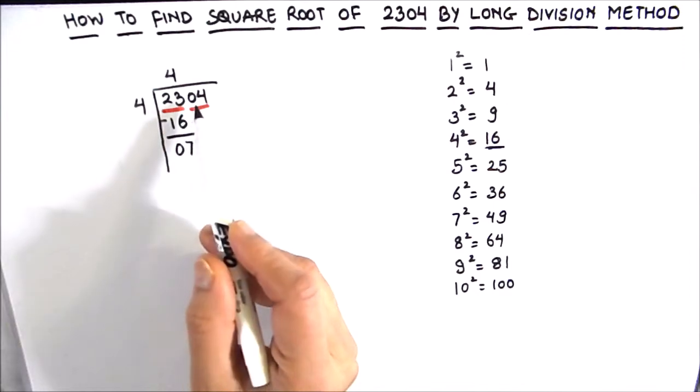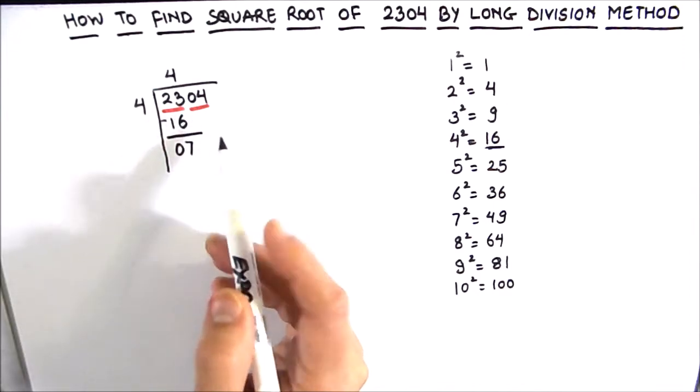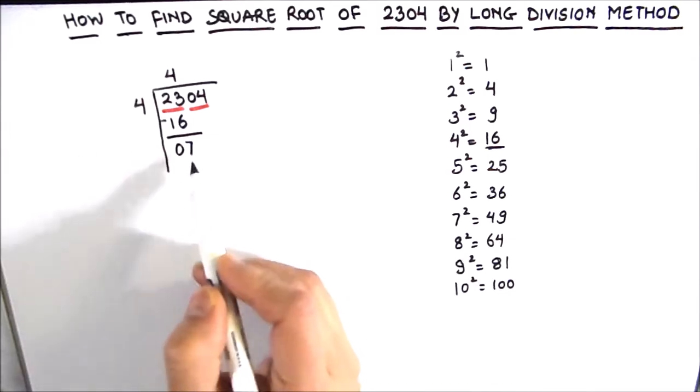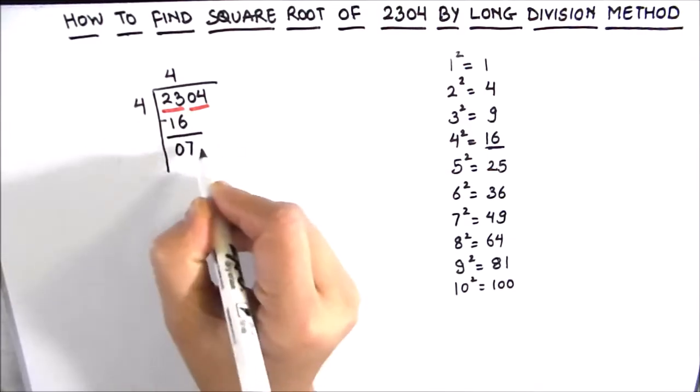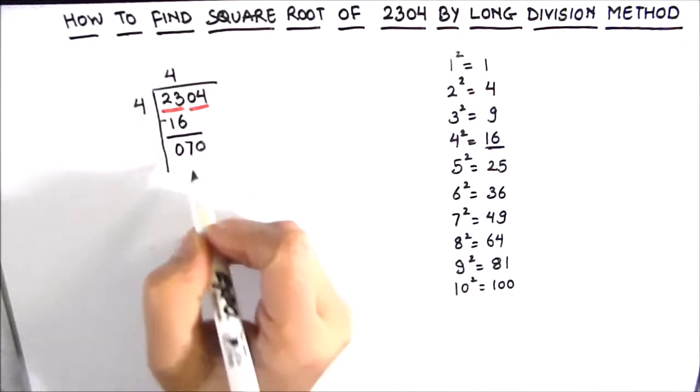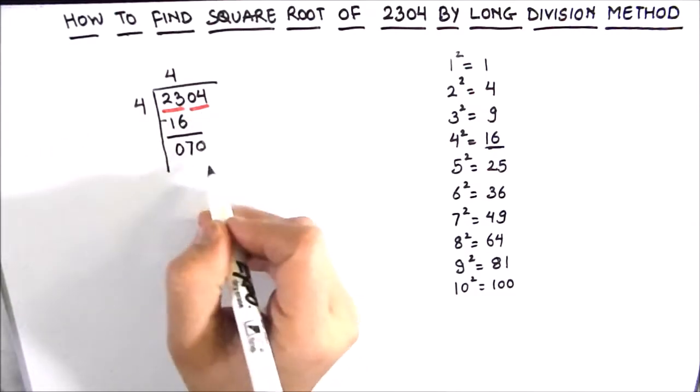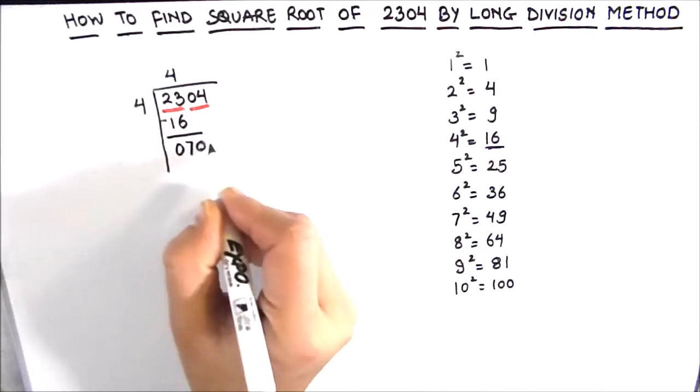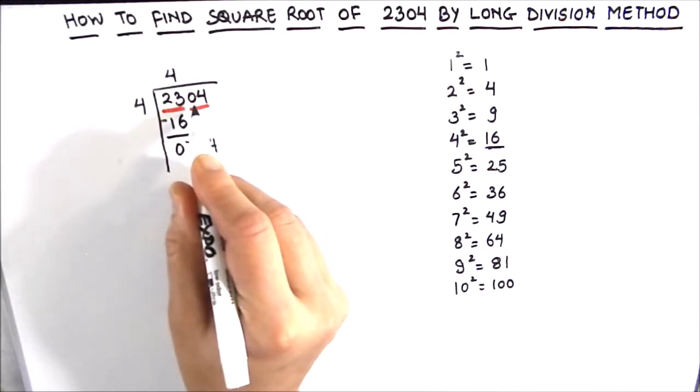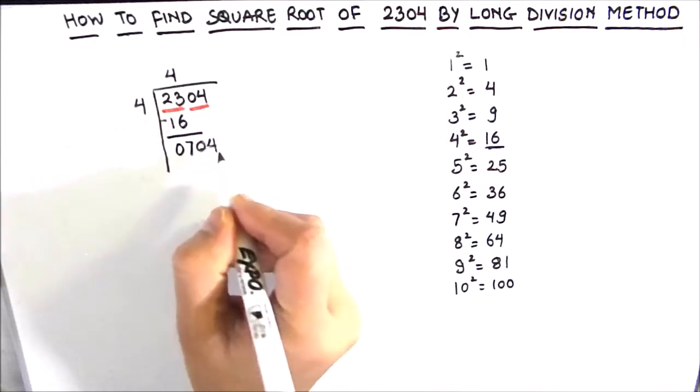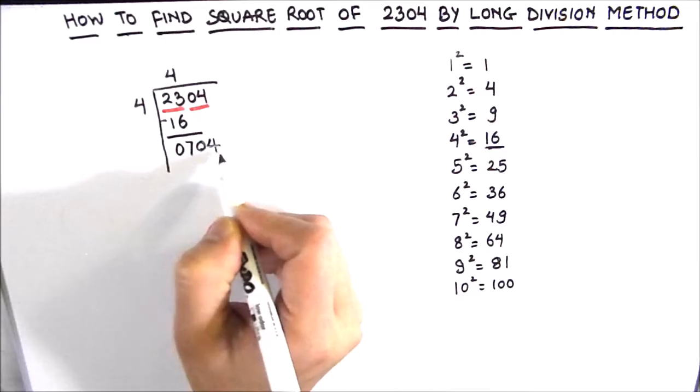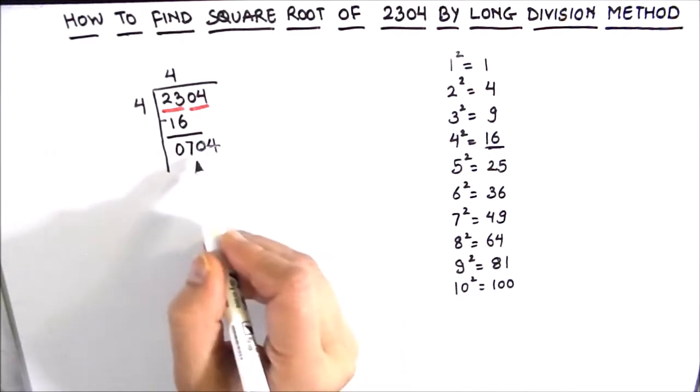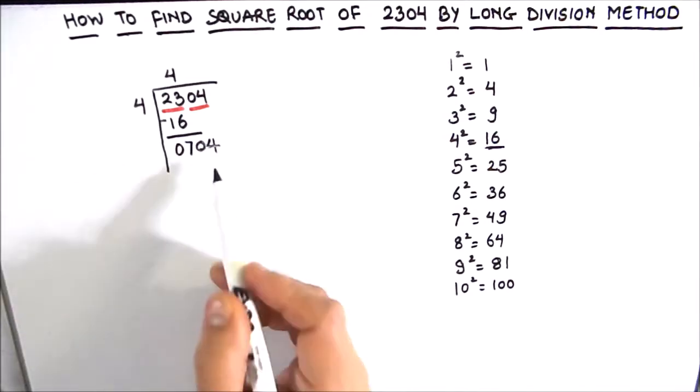After subtracting the next step is to bring down the next period to the right of the remainder. Our remainder is 7 and our next period is 04, so we will bring down 04 here. Be aware that here we are bringing the next period, that means the two numbers together, not the single number as we usually do in simple division. So this becomes 704. Now this 704 is our new dividend, the number to be divided.